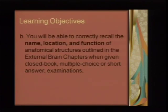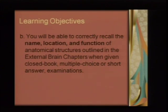Learning objective number two: you will be able to recall the name, location, and function of the anatomical structures that are in your external brain. Not everything is something you'll reference — some things you'll become familiar enough with that you'll just know them, because you'll be using them enough. That will probably be on closed book exams that are multiple choice and short answer, and the focus of those questions will be the name, location, and function of anatomical structures.